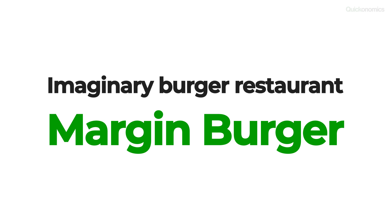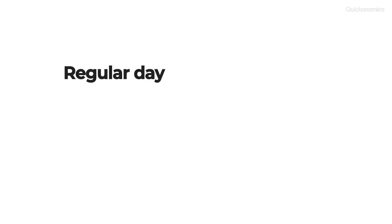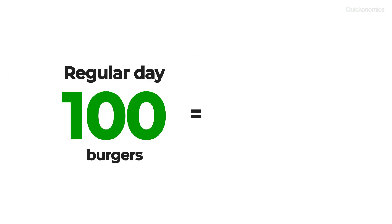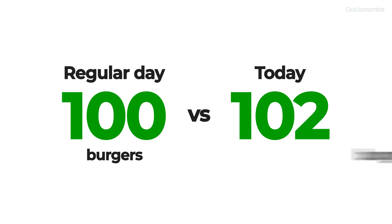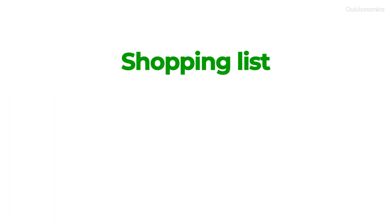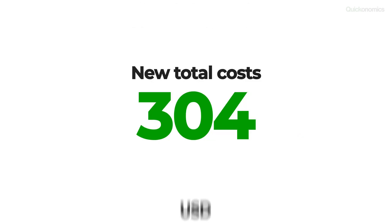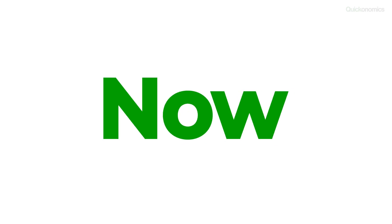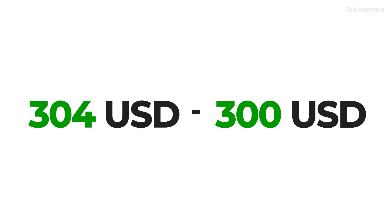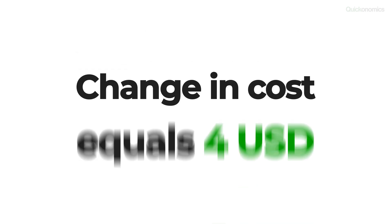To give an example, let's look at an imaginary burger restaurant — we'll call it Margin Burger. On a regular day, they sell about 100 burgers, which results in total costs of $300. Today, customers are more hungry than usual, and Margin Burger sells 102 burgers. That means they need two additional patties, more buns, more lettuce, and some other stuff, which drives up their costs to a new total of $304. If we subtract the initial $300 from the new $304, we find that the change in cost is $4.